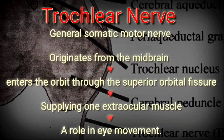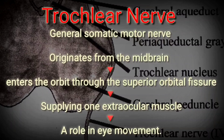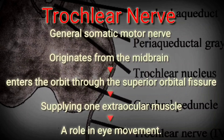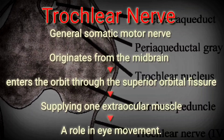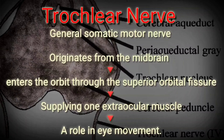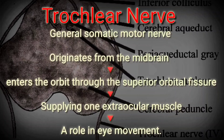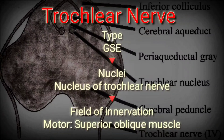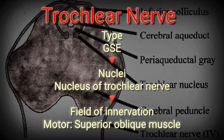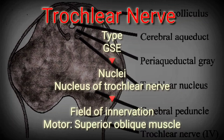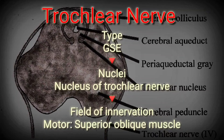The next one is the trochlear nerve, cranial nerve 4. It is a general somatic motor nerve. The trochlear nerve originates from the midbrain and enters the orbit through the superior orbital fissure, supplying one extraocular muscle, thus playing a role in eye movement. Type: GSE. Nucleus: nucleus of the trochlear nerve. Field of innervation: motor — superior oblique muscle.